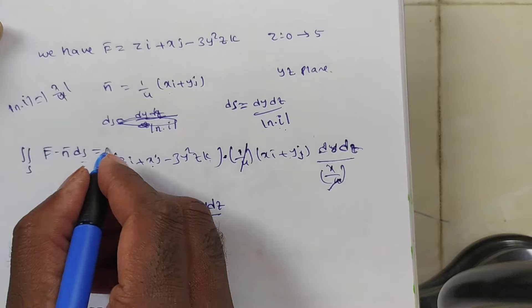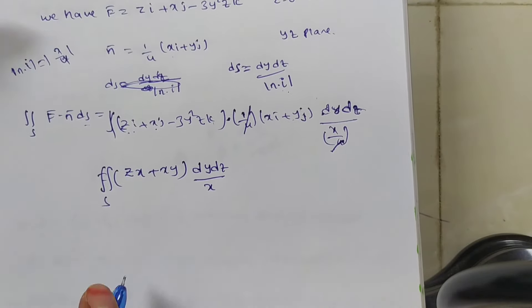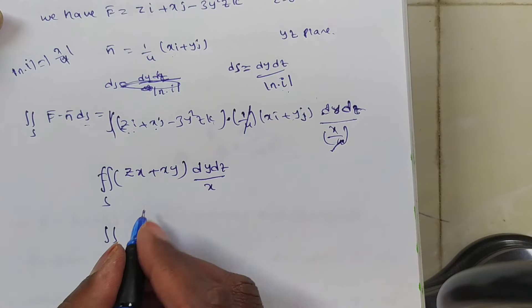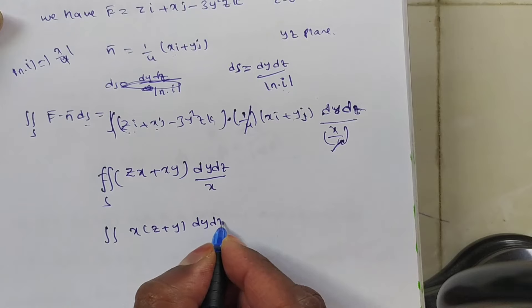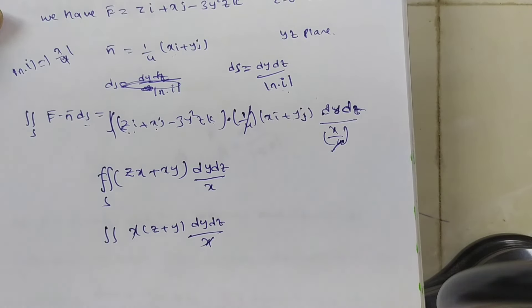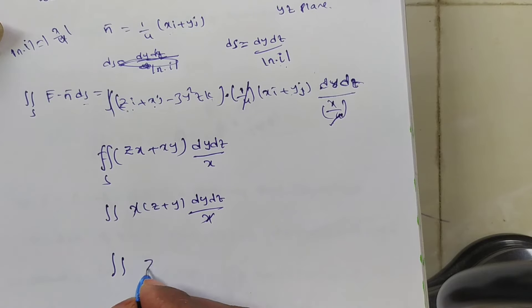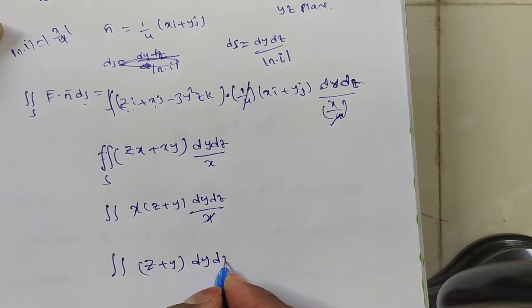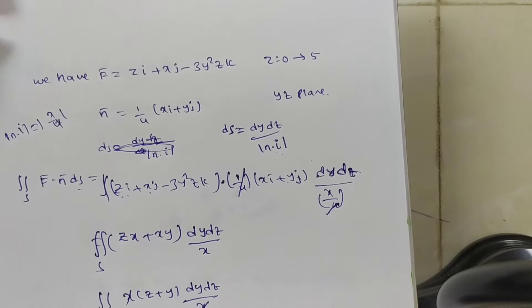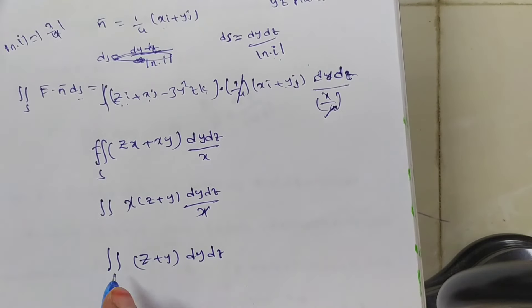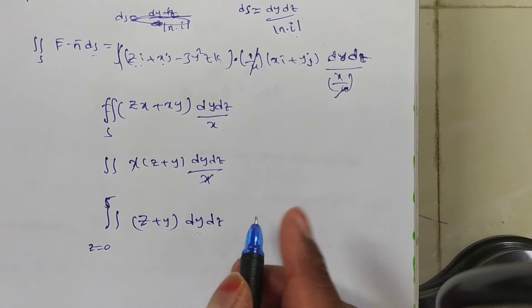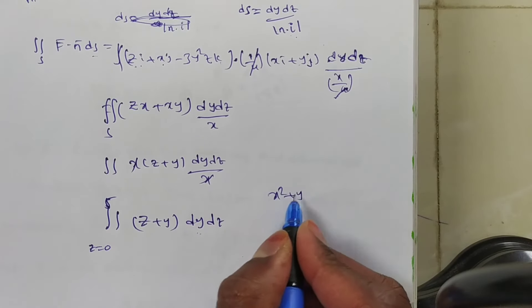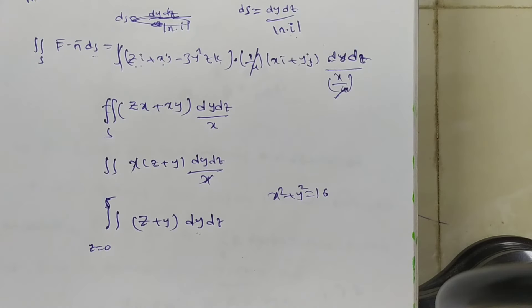Taking x common: (zx + xy)/x = z + y, so the x cancels. The integral becomes ∬(z + y) dy dz. The z limits are 0 to 5. For the y limits, from x² + y² = 16 with x = 0 we get y² = 16, so y = 0 to 4 in the first octant.